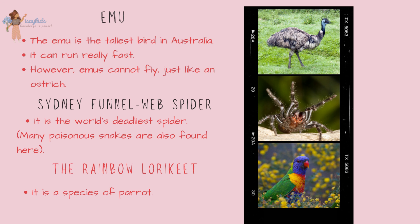The emu is the tallest bird in Australia. It can run really fast; however, emus cannot fly, just like an ostrich. The Sydney funnel-web spider is the world's deadliest spider, and many poisonous snakes are also found here. The rainbow lorikeet is a species of parrot also native to Australia.